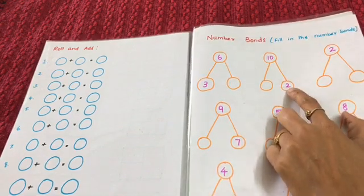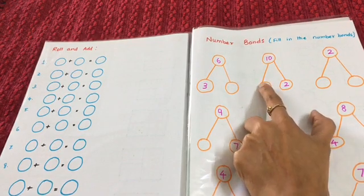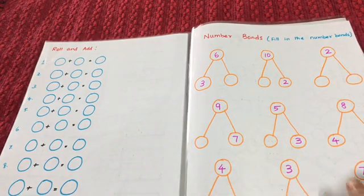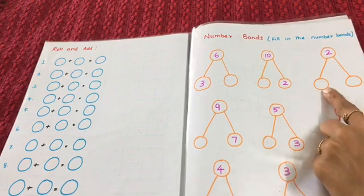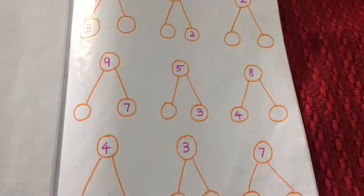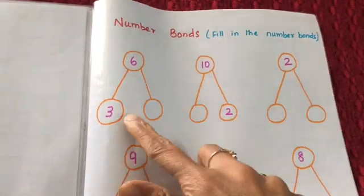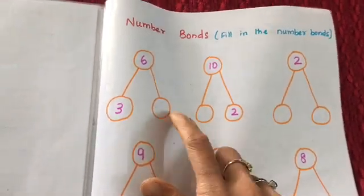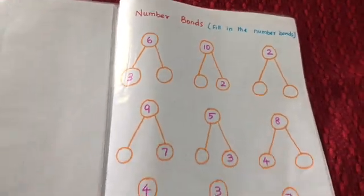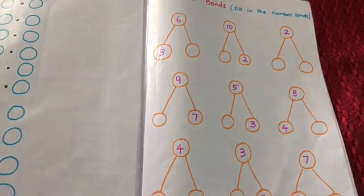This shows the relationship between addition and subtraction — he can also write 6 minus 3 makes 3. In similar way, 10 minus 2 makes 8, so he can use subtraction to solve the problems.